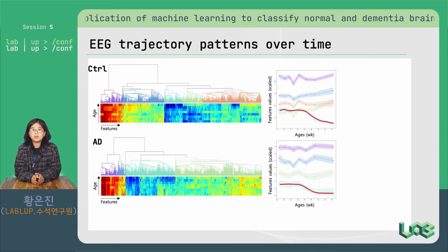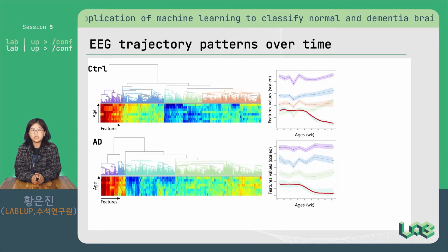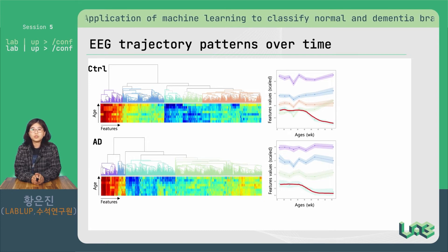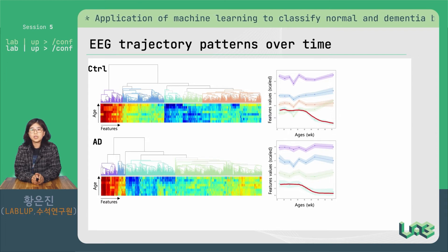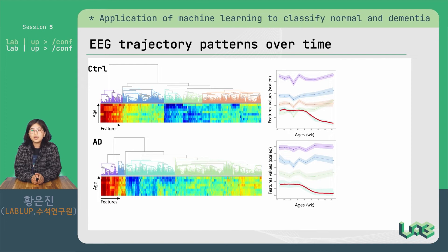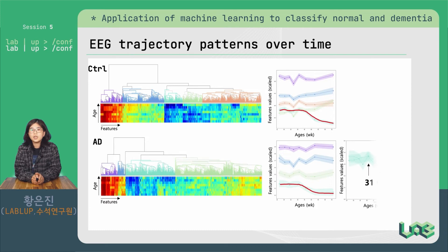These frequencies are in the gamma band, which is known to participate in cognitive functions such as perception, attention, and memory. Since the member features of the decreasing trajectory in the control group are not the same as those in the AD group, we selected and compared the member features of the decreasing trajectory in AD to those in the control group. We found that EEG features in control mice were not decreasing as in AD mice, and their trajectories started to diverge at the age of 31 weeks.